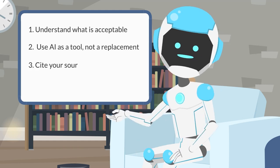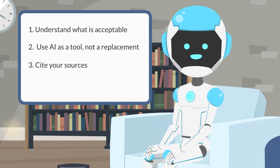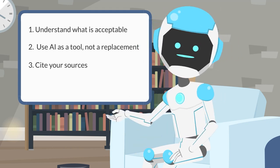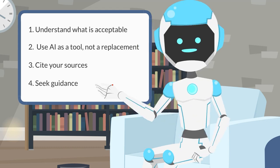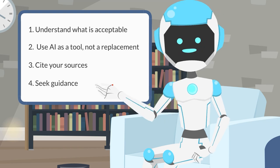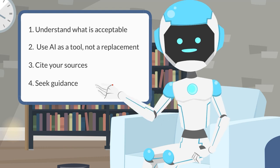If you use AI to generate written materials, be sure to properly cite any sources that you use. This includes any AI tools or models that you used in your work. If you are unsure about how to use AI in your studies, or if you have any concerns about academic integrity, don't be afraid to ask for guidance from your professors or other academic advisors. They can provide you with helpful advice and support.